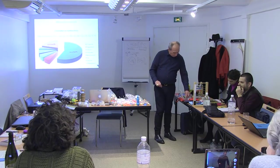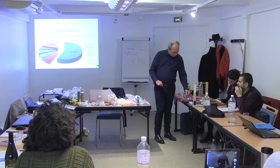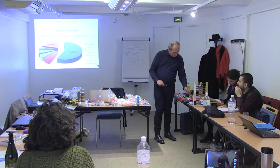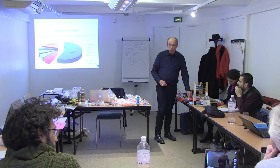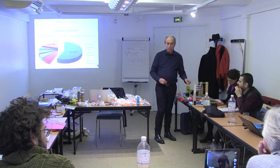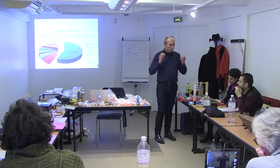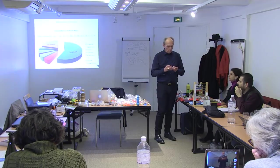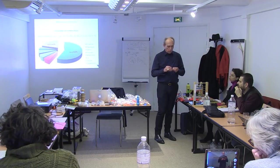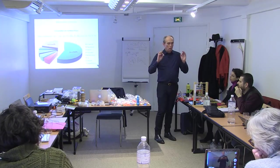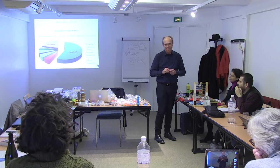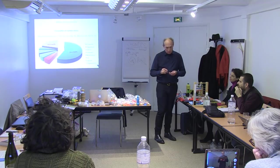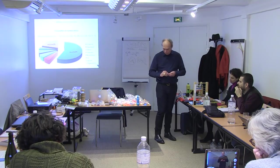Si vous retenez qu'un cation, c'est 6 picots — 6 valences — qu'un carbone c'est 4 valences et que l'oxygène c'est 2 valences, vous pouvez déjà comprendre beaucoup de choses.